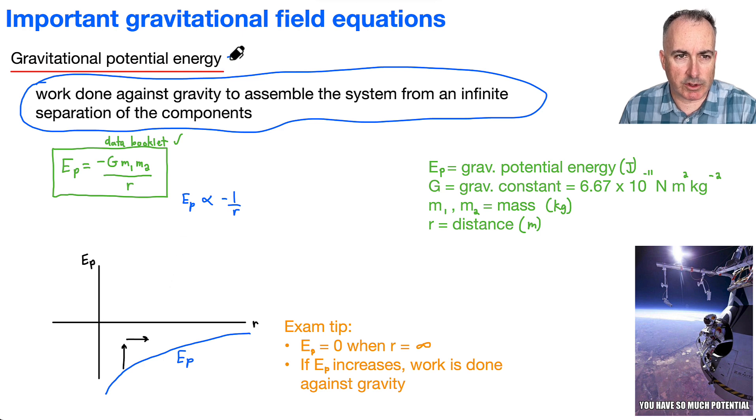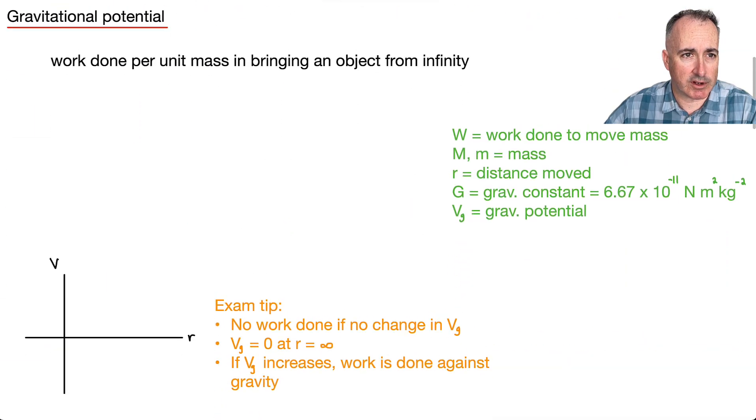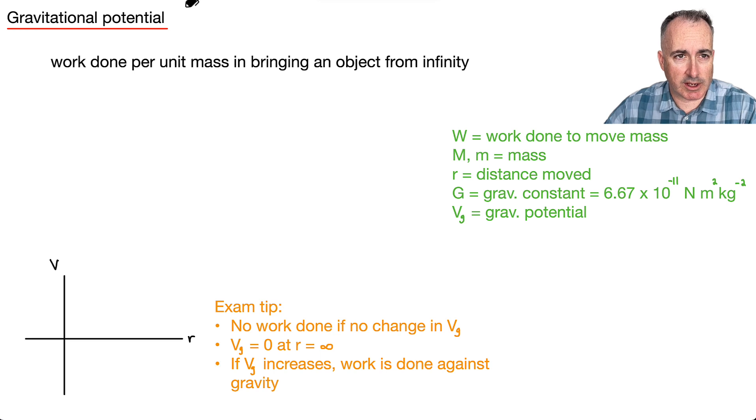So just to go back here. We were just defining this one here as Ep, which is in joules. I'm going to do that because on the next one right here, which is gravitational potential, this one is going to be a different one. We're going to call it Vg. And we're going to see what kind of units we're going to use for it.